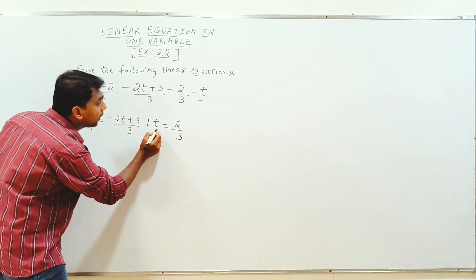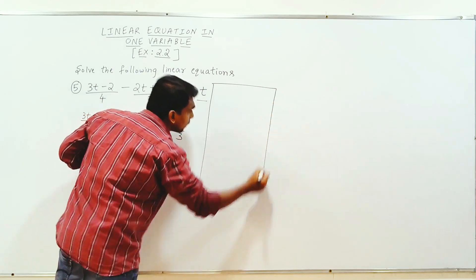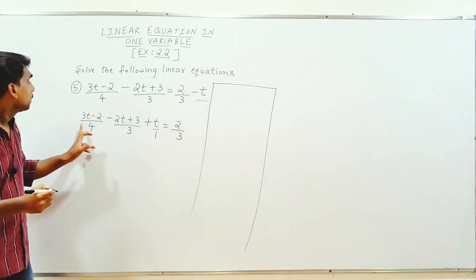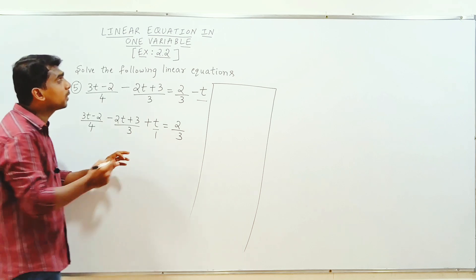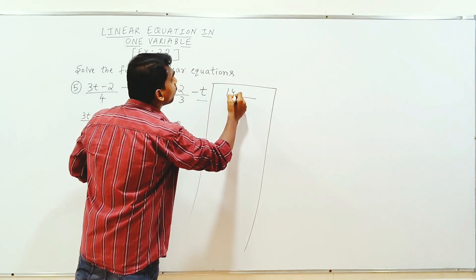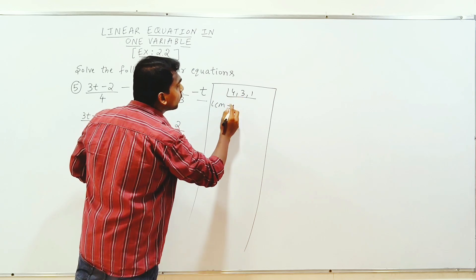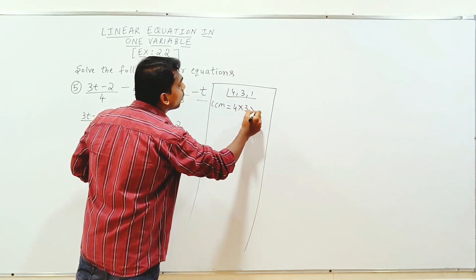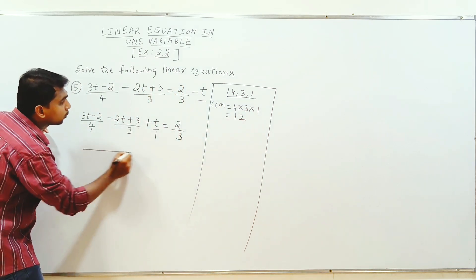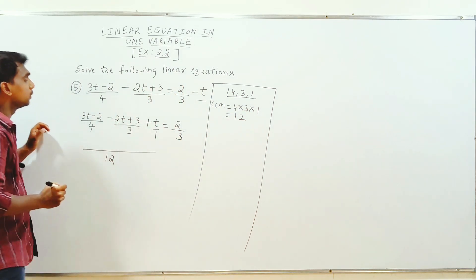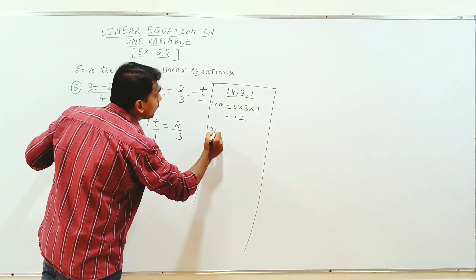This is equal to 1. This is equal to 3 by 4, 4 plus 4 is equal to 4, 4 plus 3 plus 1 is equal to 4. This is equal to 8. So you multiply. 4, 3, 12, 12, 12, 12. Okay, LCM is 12.